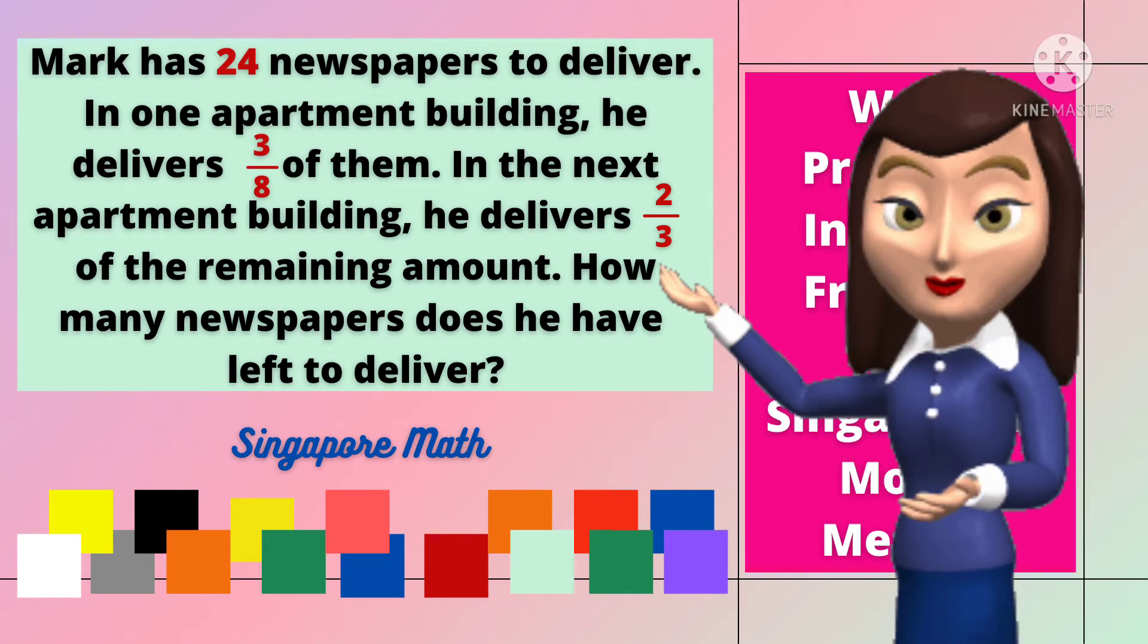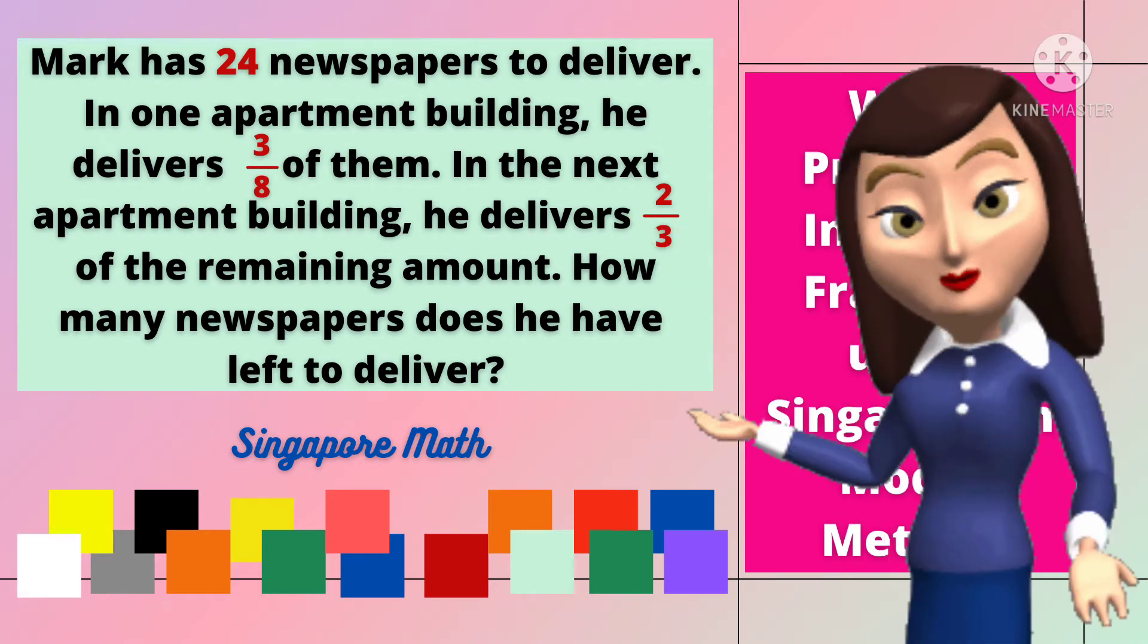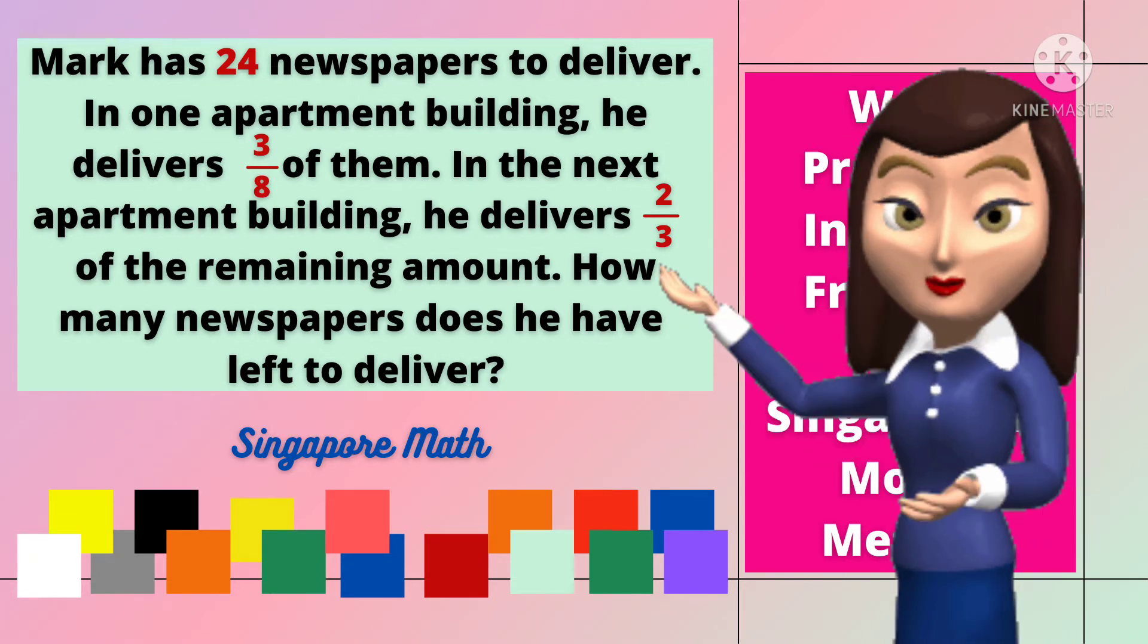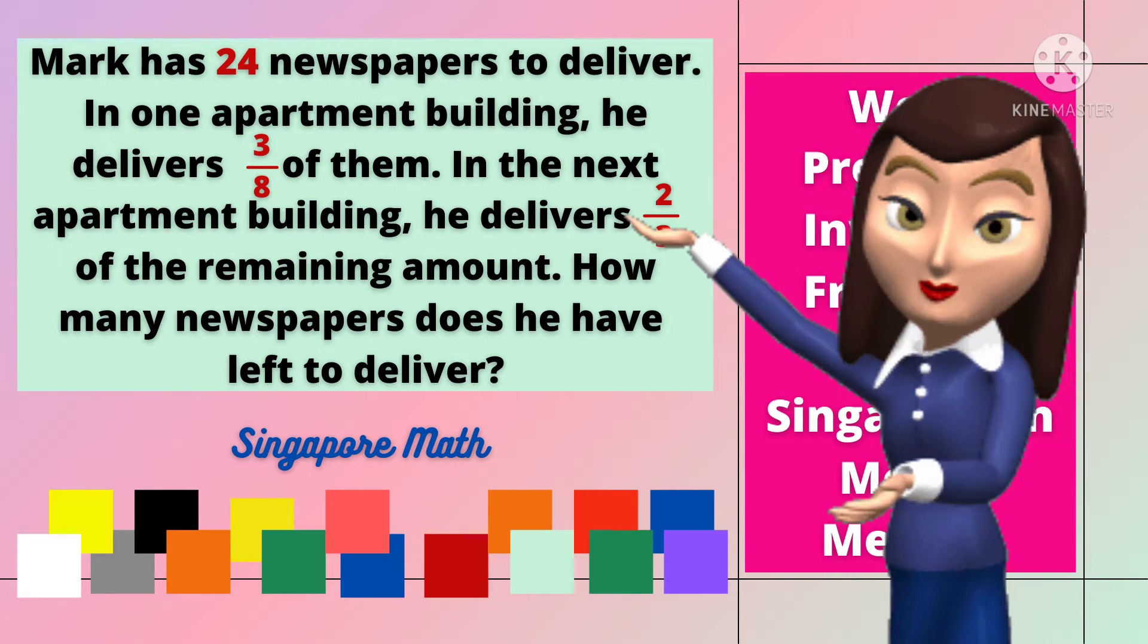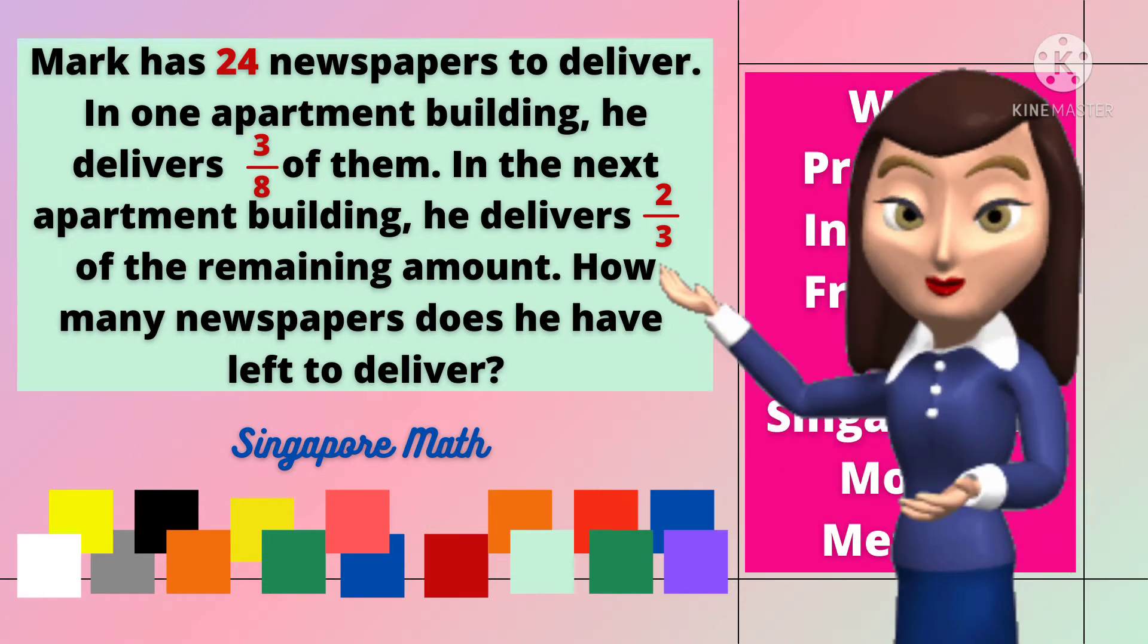Mark has 24 newspapers to deliver. In one apartment building, he delivers three-eighths of them. In the next apartment building, he delivers two-thirds of the remaining amount. How many newspapers does he have left to deliver?